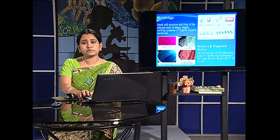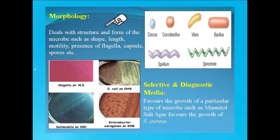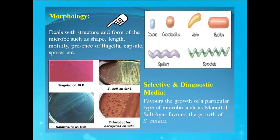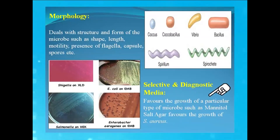One can identify a microbe by observing its morphology, which deals with the structure, form, shape, length, etc. of a microbe — that is, whether the microbe has flagella, forms a capsule or forms a spore. One can also identify a microbe by cultivating it on a selective or diagnostic media. A selective media favours the growth of a particular type of microbe; for example, Mannitol salt agar favours the growth of the bacteria known as Staphylococcus aureus.